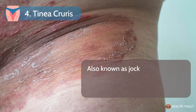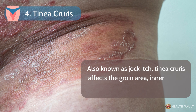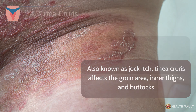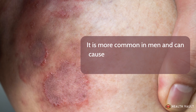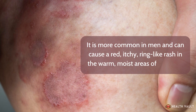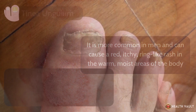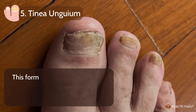Number 4: Tinea cruris. Also known as jock itch, tinea cruris affects the groin area, inner thighs, and buttocks. It is more common in men and can cause a red, itchy, ring-like rash in the warm, moist areas of the body.